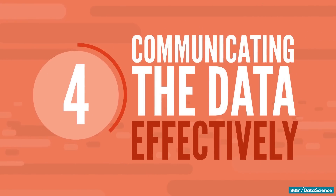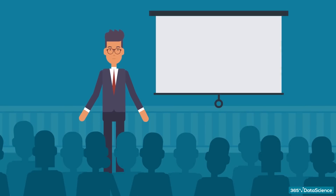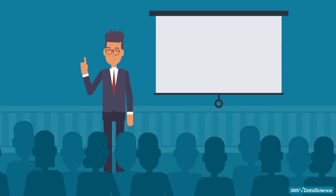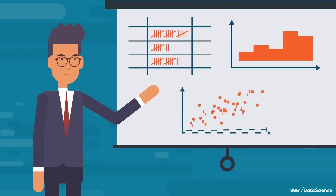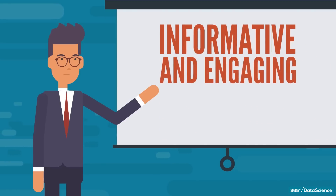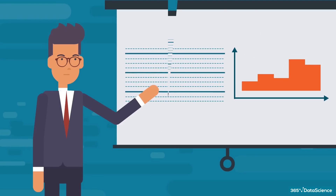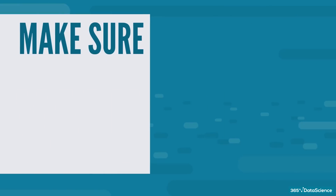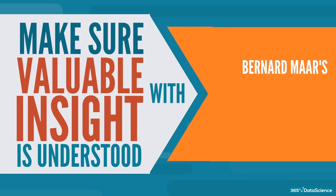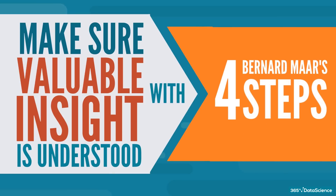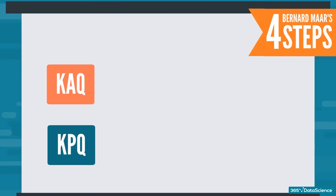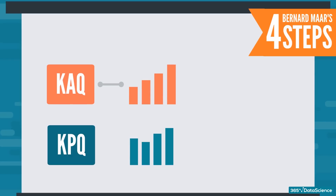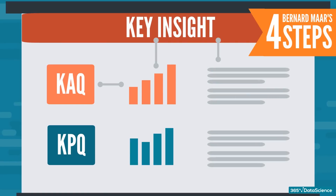Number four: communicating the data effectively. To prepare a clear and compelling presentation of your insights, use different types of charts and graphs, such as tally charts, histograms, scatterplots, etc. For truly informative and engaging data storytelling, use graphs and narrative together. This will help your audience see the big picture and derive business value from the collected data. Bernard Marr, a renowned strategic performance consultant, suggests four steps to powerful and strategically relevant reports: frame the report with KAQs and KPQs; support them with suitable and informative graphs and charts; use headings to capture the key insights; and narratives to provide context for the visuals.